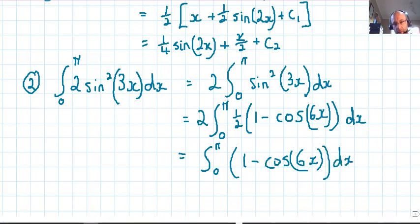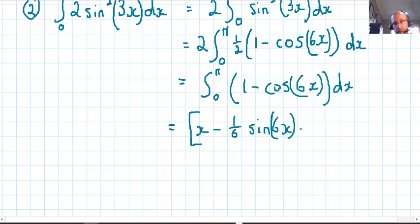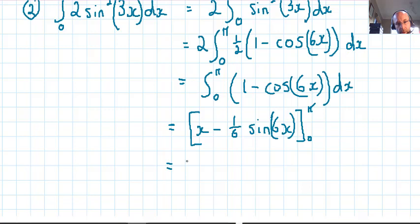Let's go do that now. So we have [x - 1/6 sin(6x)], the integral of cos is sine, from zero to pi. Subbing our values in now, so we have pi - 1/6 sin(6π).